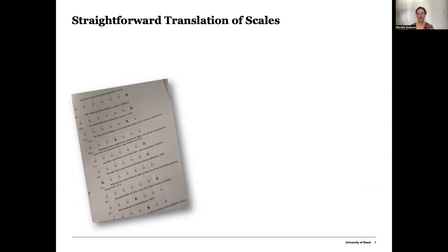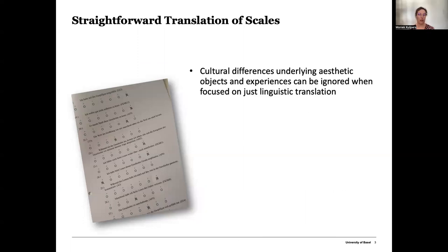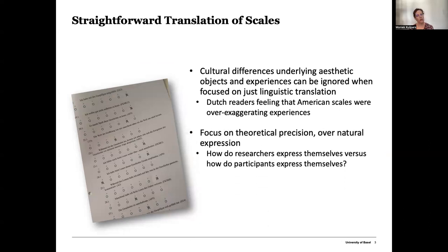Straightforward translation of instruments and stimulus materials from one language into another, in the case of studying aesthetic objects and experiences, is perhaps not ideal. There are cultural differences underlying aesthetic objects and experiences that would be ignored if we just focused on linguistic translations. For example, Dutch readers in my earlier research seem to find some of the scales I used to capture absorption over-exaggerated. Plus, straightforward translations made by researchers can be focused on theoretical precision, which is important, but it can also mean we lose sight of the participants and whether they understand what it is that we want to capture.